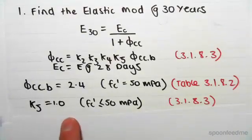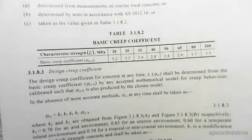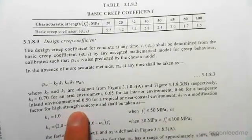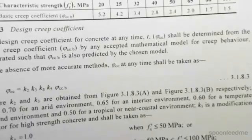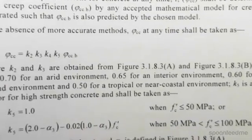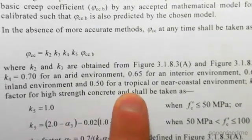The next value is k4. If you were to read this paragraph in 3.1.8.3, it gives a description of all the different environments that the structure could be in. I didn't say in the question what it is, but we're going to assume that for our case the structure...